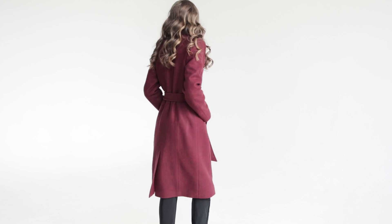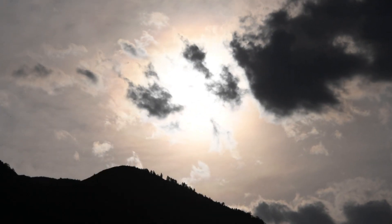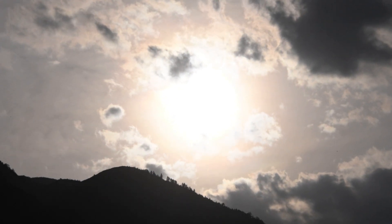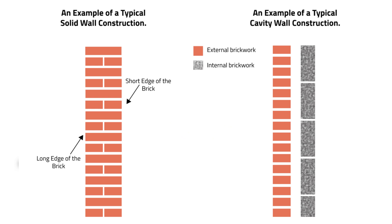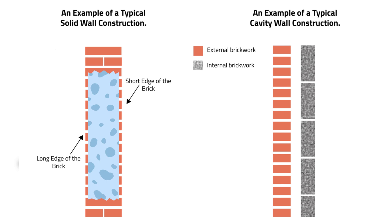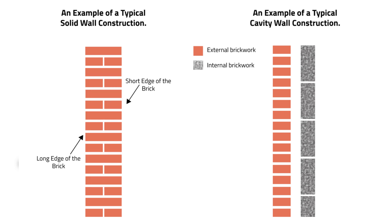A thick woolen coat actually absorbs some of that moisture, some of that rain — but like a woolen coat, this isn't really a problem because when it stops raining, the wool starts to dry out. The woolen coat dries out long before any rainwater gets to the inside where your body might start to feel wet. This woolen coat analogy is just like our solid brick walls — if the exterior gets wet and isn't allowed to dry out, the wall will continue to get wet until it's saturated.